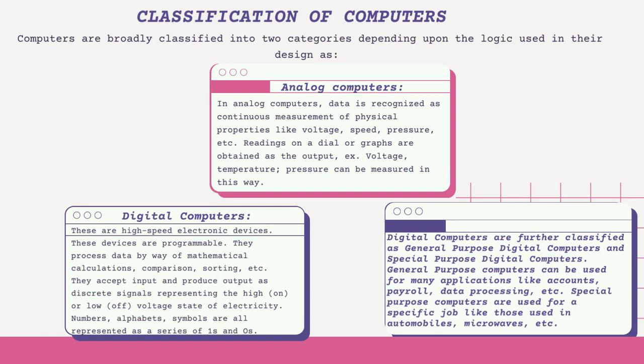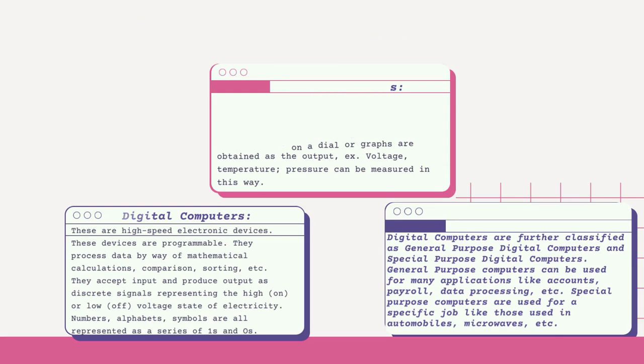Digital computers are further classified as general-purpose digital computers and special-purpose digital computers. General-purpose computers can be used for many applications like accounts, payroll, data processing, etc. Special-purpose computers are used for a specific job, like those used in automobiles, microwaves, etc.